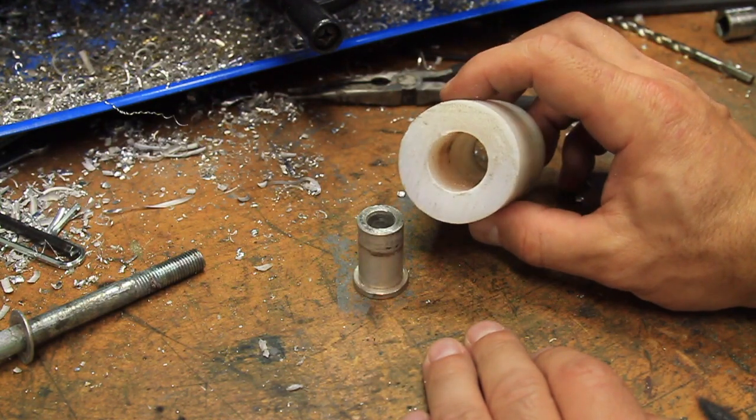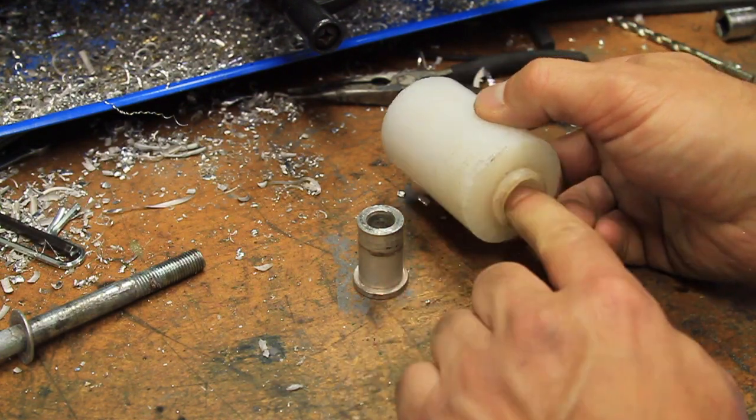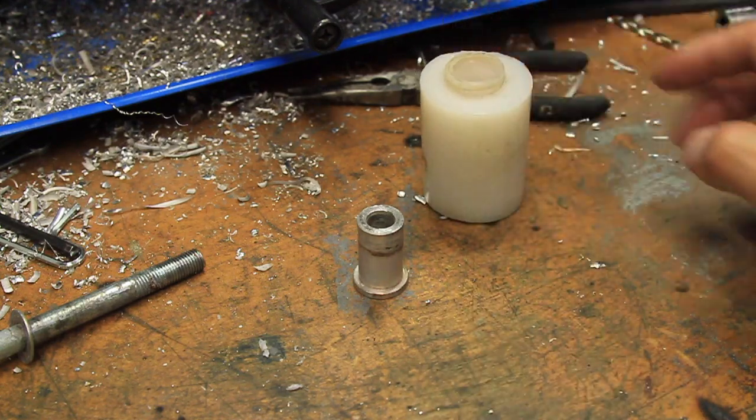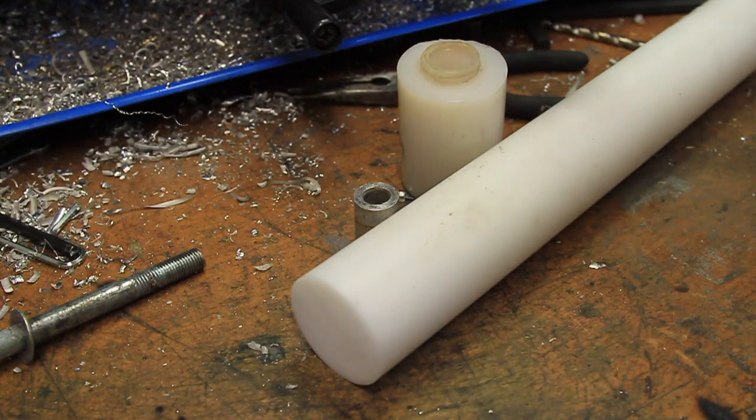Now we can notice that there is an internal shoulder that needs to be created as well. To start, I measured and cut a piece of white acetyl and left myself plenty of extra length.